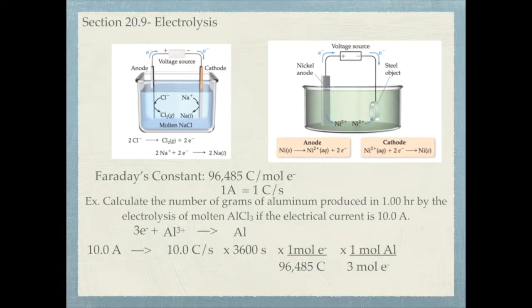Then I can get into grams by simply using my molar mass. When I do all of that out, I end up finding that I'm going to produce a total of 3.36 grams of aluminum solid by this electrolysis reaction.